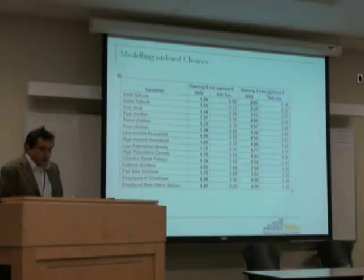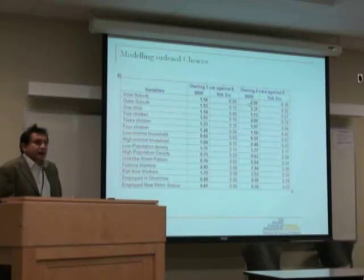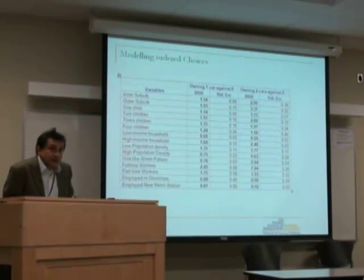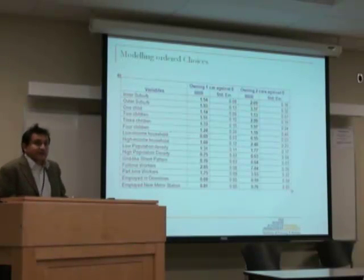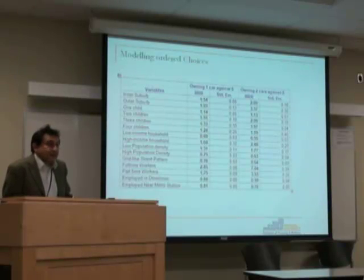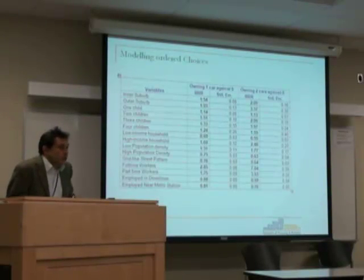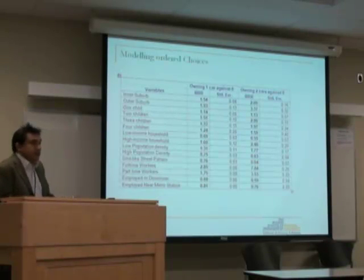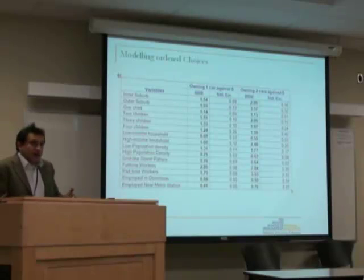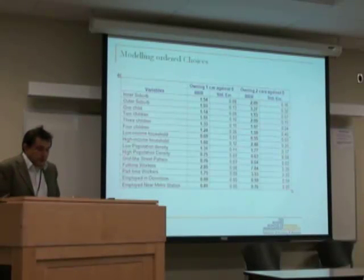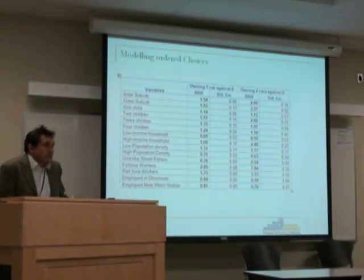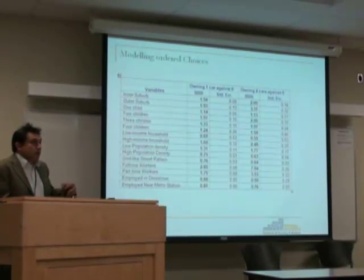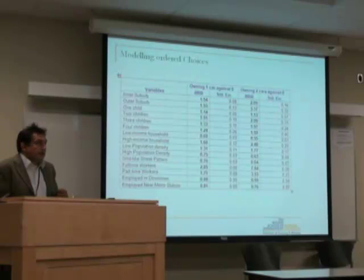If we look at the third column of the table, reporting the odds for two cars against zero, households in the inner suburbs are two times more likely to own two cars rather than no car compared to households in the urban core. Similarly, households in the outer suburbs are 3.4 times as likely to own two cars against not owning any car. This shows how location impacts the propensity of a household to own or not own a car.